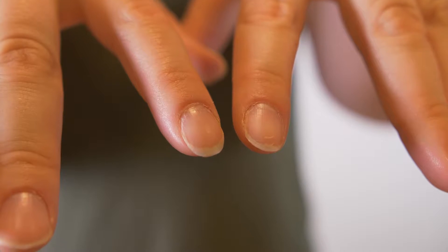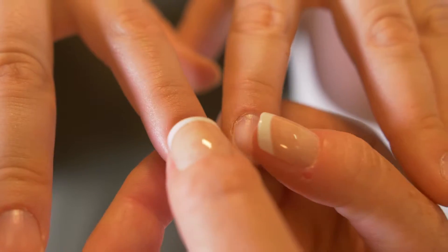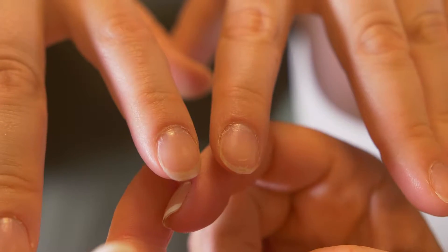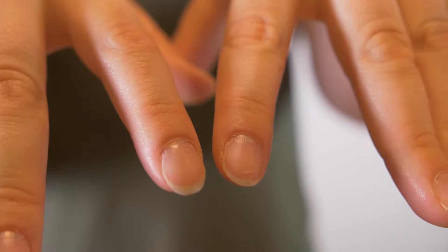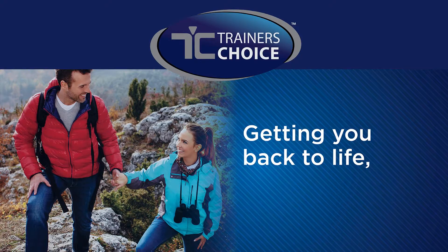To check circulation, pinch the fingertips in both hands. The nails should go white and return to the natural color at the same rate as the unbraced limb. If the refill is slow,